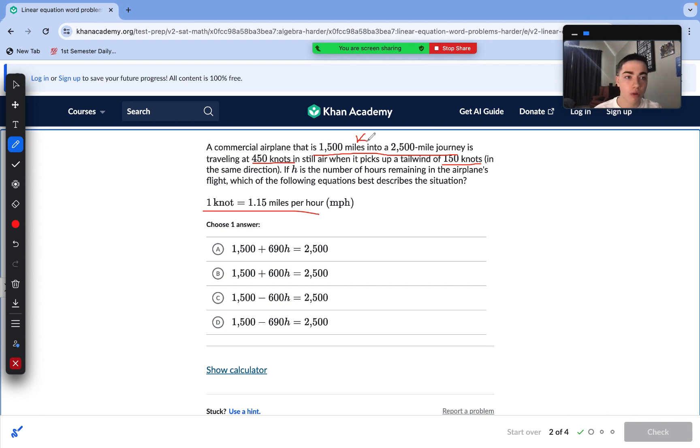Really quick, they give us this conversion for a reason. We're dealing with miles here. We're not dealing with nautical values, so let's just go ahead and convert all of our knot values into mile values. And something that's really important here, tailwind in the same direction. If you can imagine this in your mind, it's kind of like the plane's traveling, and it's getting pushed along by a tailwind. That's adding to the speed. So, we really have a speed of 600 knots. And then we start with 1,500, and we are into a 2,500-mile journey.